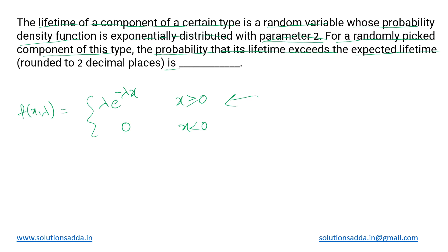They are saying that with parameter 2, the lambda value is given as 2. For an exponentially distributed probability function, the mean value is given as 1 divided by λ, which in this case becomes 1 divided by 2, because lambda is 2, so the mean is 0.5.